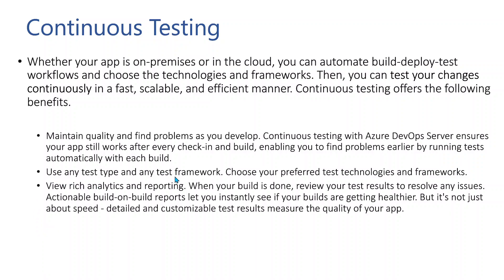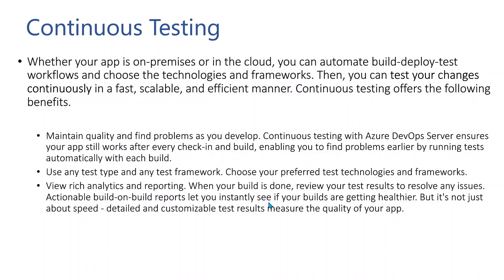You can use any test type or test framework — choose your preferred test technologies and frameworks of your choice. Azure Pipelines has very rich analytics and reporting. When your build is done, you can review your test results to resolve any issues. You can export your test results in the form of a report from your build itself, so you can clearly see what tests ran and what the test results were. There are a lot of test-related artifacts available when you run a pipeline. Actionable build reports let you instantly see if your builds are getting healthier.